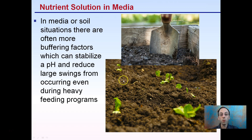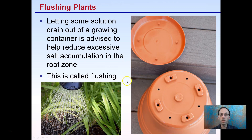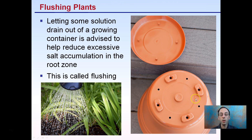Lastly, flushing plants: letting some solution drain out of the growing container is advised to help reduce excessive salt accumulation in the root zone. This is where you're adding a lot of water, and with holes in the bottom of your containers and a catch basin, you can monitor how much water is actually being flushed through the media. This helps explain nutrient solutions, how they're utilized, and what to look for to maximize the efficiency of your grow.